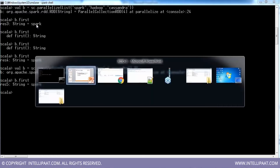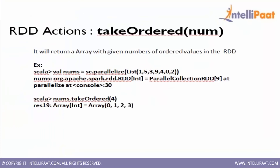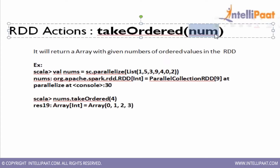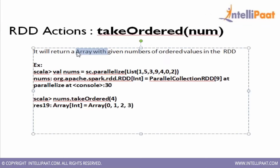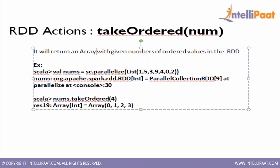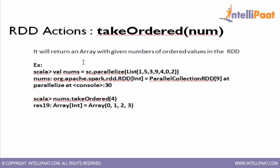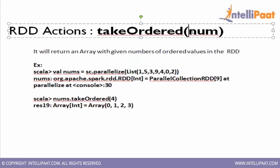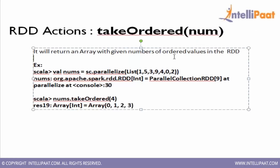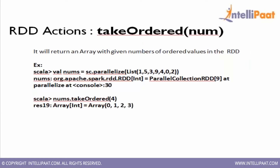That's about the first action. Another action is takeOrdered, which takes a parameter — a number. It returns an array with the given number of ordered values from the RDD. So if you say takeOrdered(4) or takeOrdered(3), it will give you three elements in sorted order.